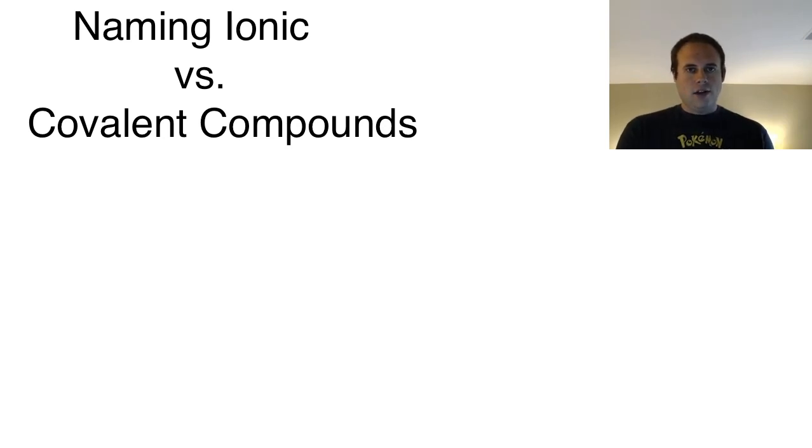They will either forget the "-ide" suffix that goes at the end of the second portion of a compound, or they'll forget the prefixes in the covalent version, or they'll use them inappropriately in the ionic version. I wanted to break it down as far as ionic versus covalent and what you could expect with the naming.